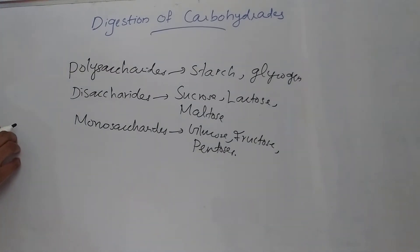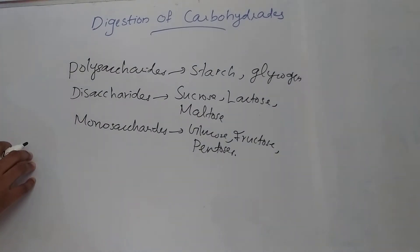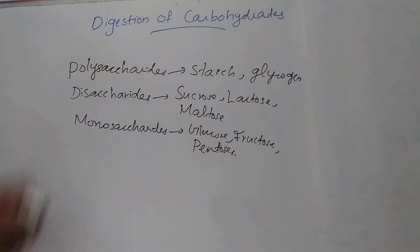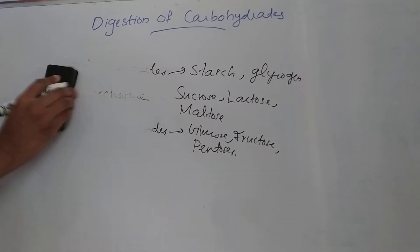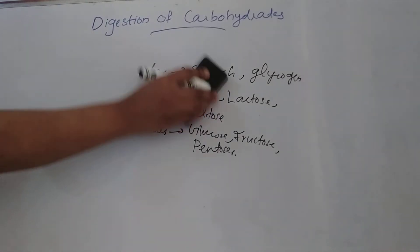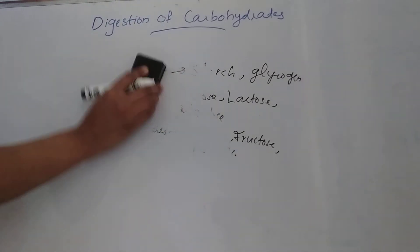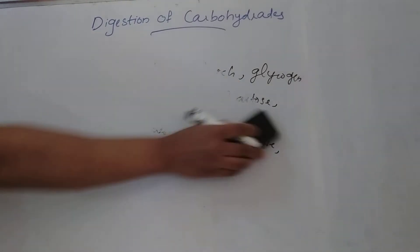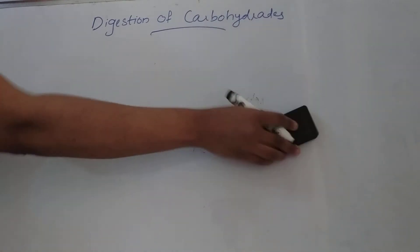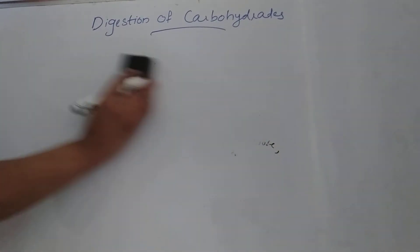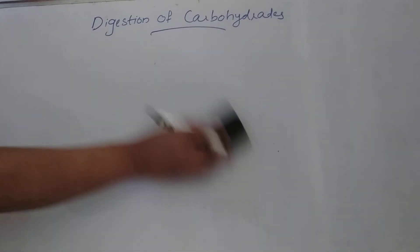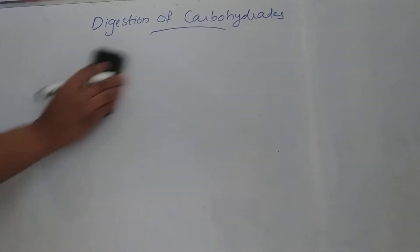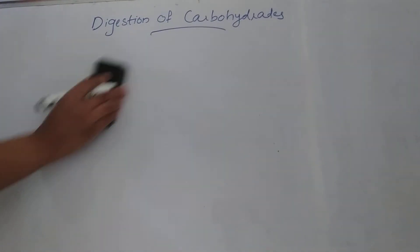Carbohydrate digestion starts in the mouth. There are three steps: digestion in the mouth, digestion in the stomach, and digestion in the small intestine. First, we will see digestion in the mouth.